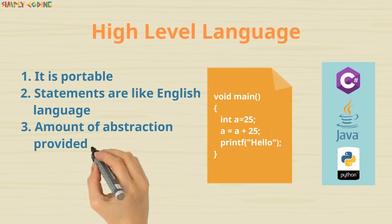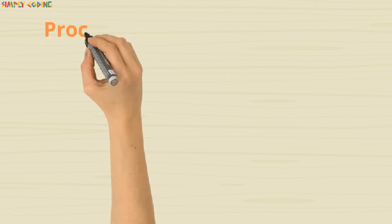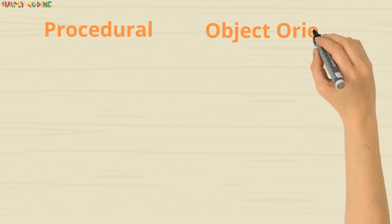The amount of abstraction provided defines how high level a programming language is. The high level languages are also of two types, procedural language and object oriented language.